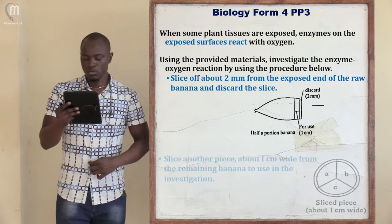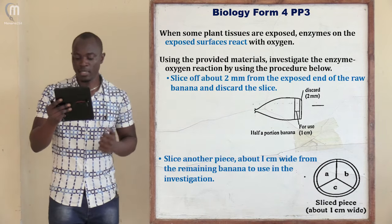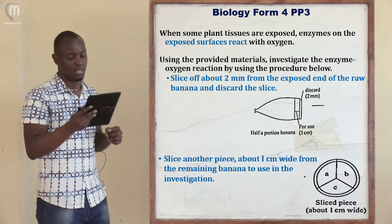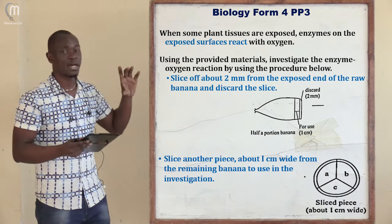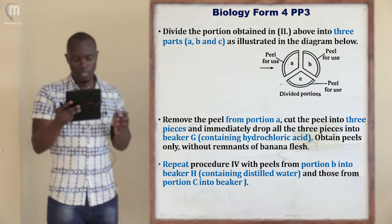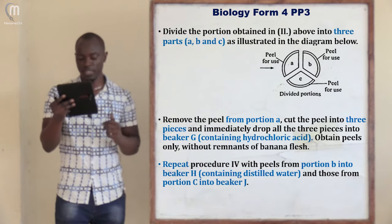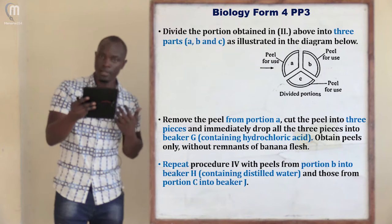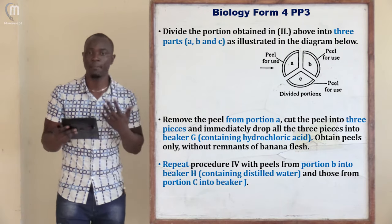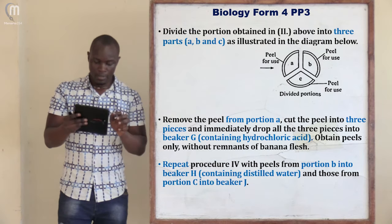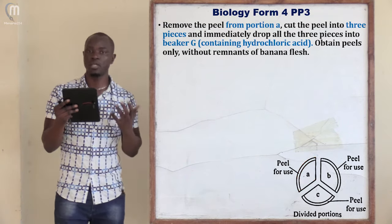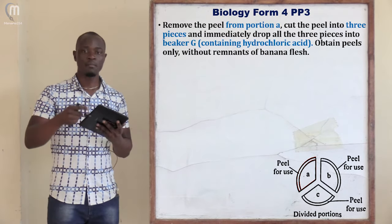After discarding the tip, the next procedure is to slice another piece about 1 cm wide from the remaining banana to use in the investigation. Then divide this 1 cm portion into about 3 parts: part A, part B, and part C. Next, remove the peel from portion A — the peel being the outer covering, like the epidermis — and cut the peel into 3 pieces.